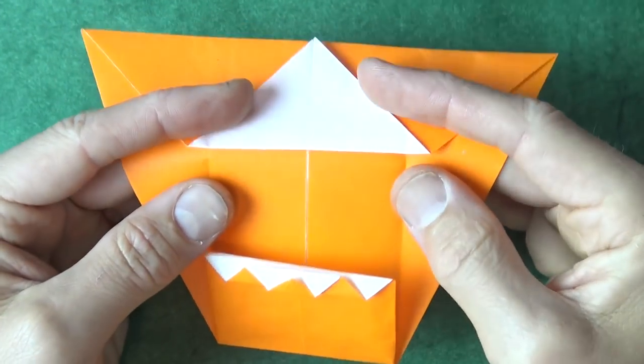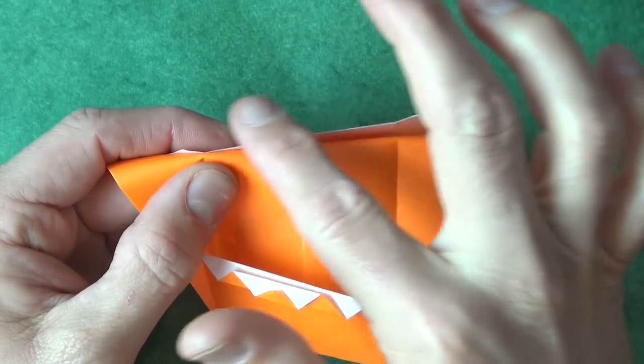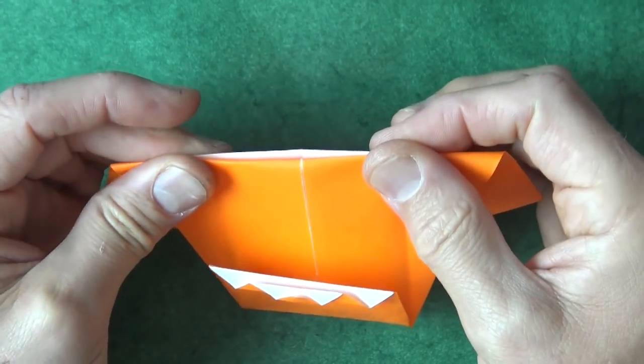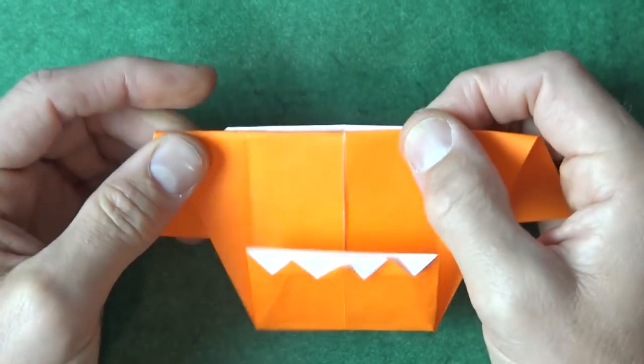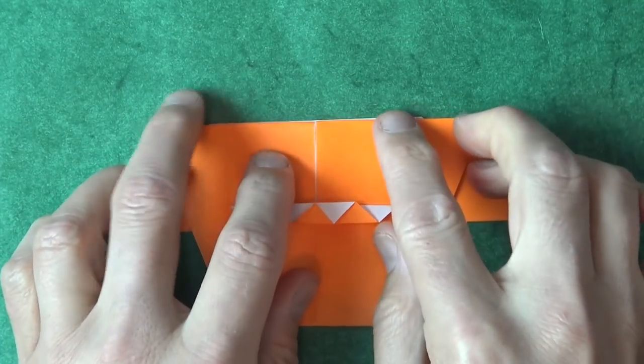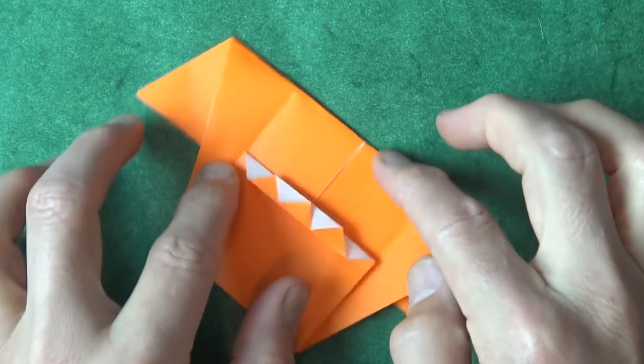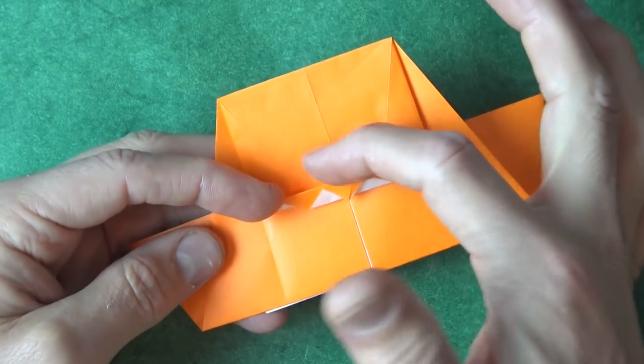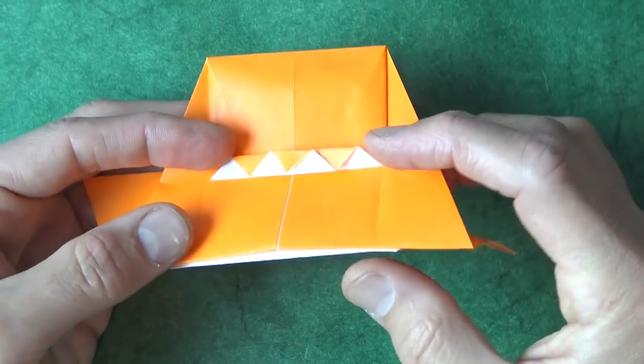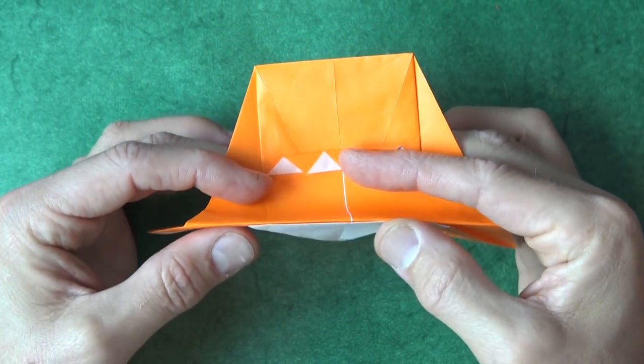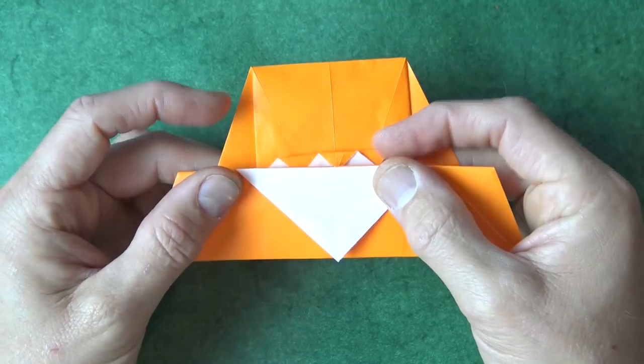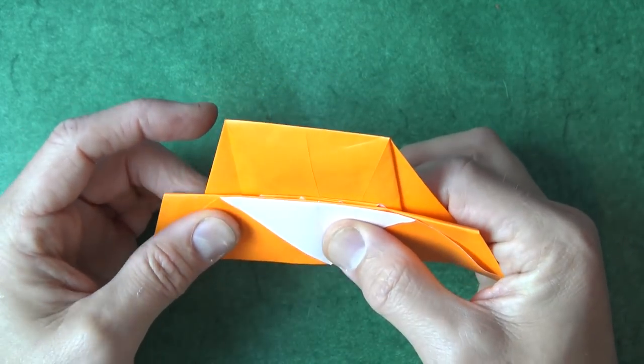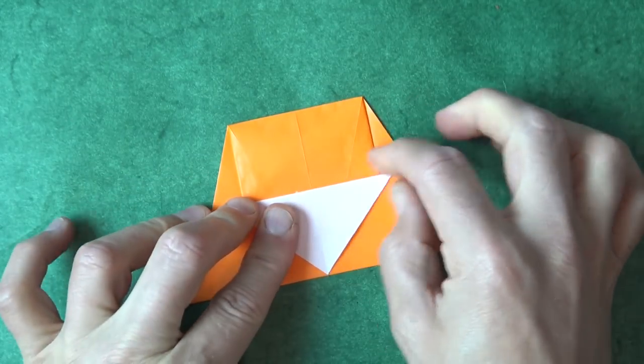All right, now let's fold the whole top part behind, lining it up with this edge. And rotate. And now fold this edge to this edge. And when you do that, let the rear flap swing down.